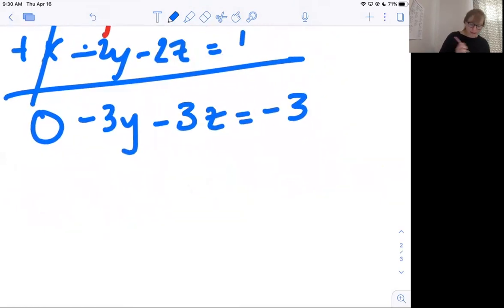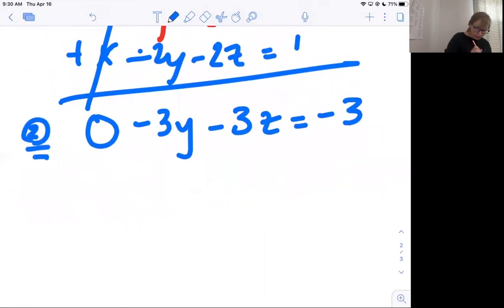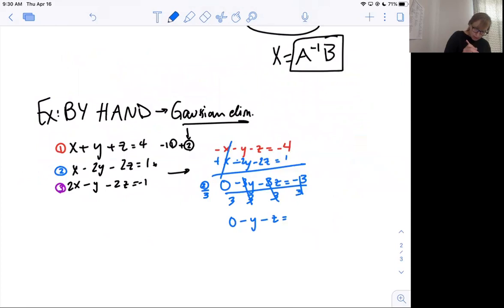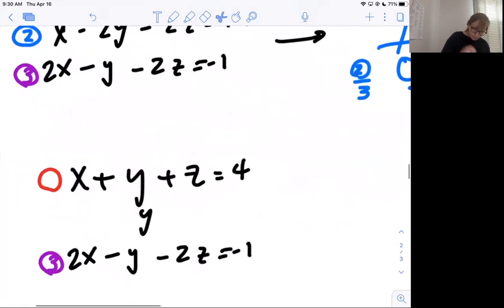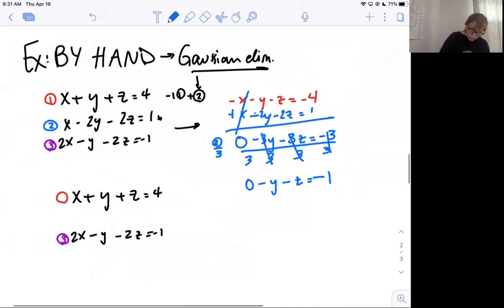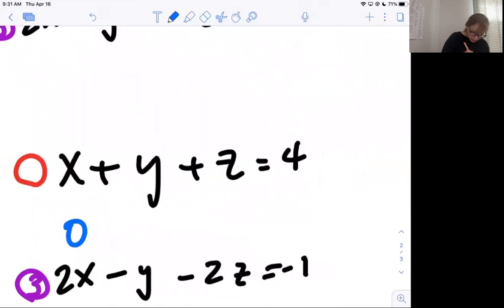This is cool because my X's cancel. I'm left with negative 3Y minus 3Z equals negative 3, and I'm going to put a zero out front. Before I bring this over, I'm going to do one more step - divide everything in 2 by 3. This becomes 0 minus Y minus Z equals negative 1. So I'm going to rewrite 1, rewrite 3, and then my new 2 is 0 minus Y minus Z equals negative 1.